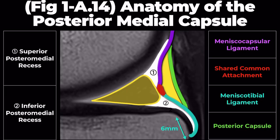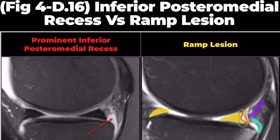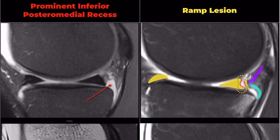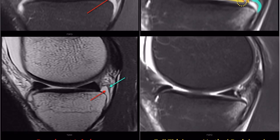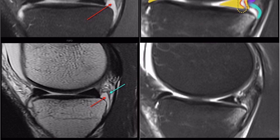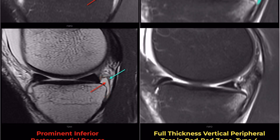The superior and inferior posteromedial recesses can appear similar to ramp lesions if prominent. Looking at a case, the right one is classified as a full-thickness vertical peripheral tear in the red-red zone, making it a ramp lesion type 4a. However, the left case appears to be a meniscotibial ligament tear due to a prominent inferior posteromedial recess.